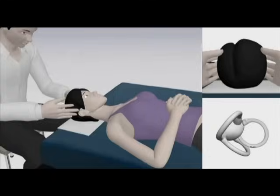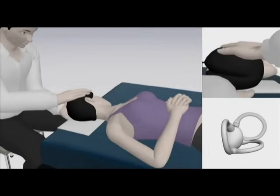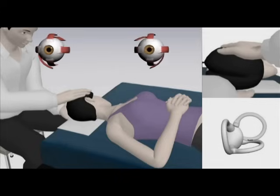Video 2 shows a positional geotropic nystagmus, beating toward the ground, during the supine roll test in benign paroxysmal positional vertigo of the right horizontal semicircular canal. The patient is moved from the sitting to the supine position and then the head turned to the left ear down position. As the free-floating otolithic debris moves away from the cupula of the right horizontal canal, a left-beating geotropic nystagmus develops.